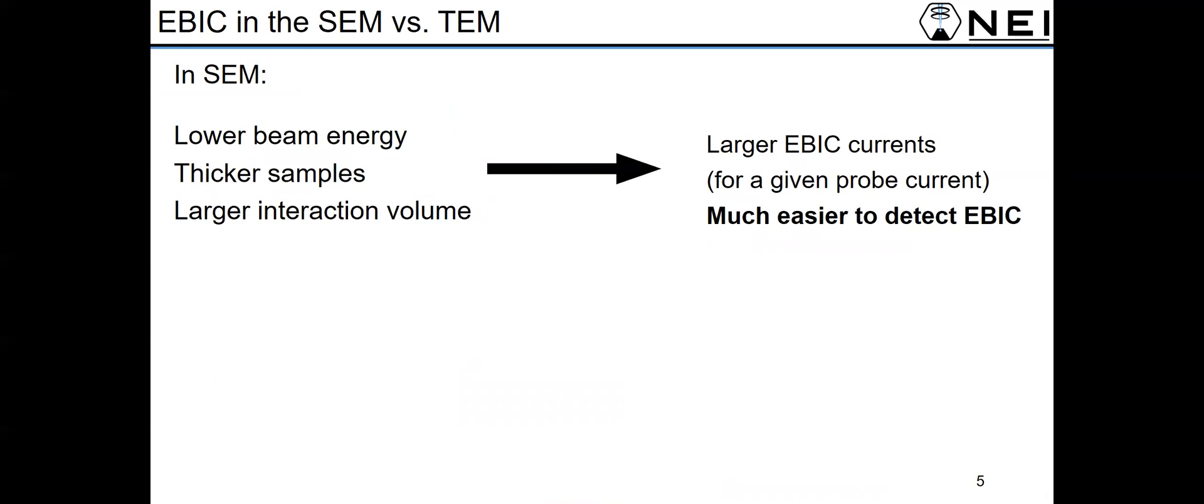Talking generally about measuring EBIC in the SEM, regardless of what type of contrast you're measuring and what EBIC mode you're looking for. In the SEM, you generally have a lower beam energy, thicker samples, and all this makes for a larger interaction volume, which generally means that whatever EBIC signal you're measuring, it's going to be much larger in the SEM. And that means it's typically much easier to detect.